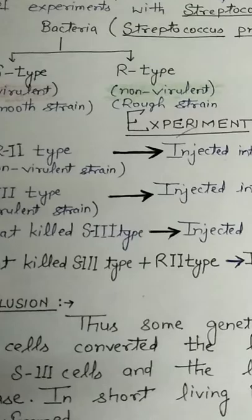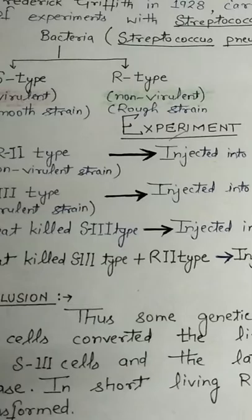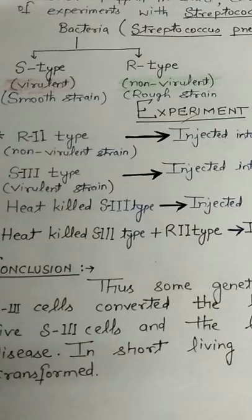Both S and R strains are found in several types and are known as S1, S2, S3, etc., and R1, R2, R3, etc., respectively. Griffith chose S3 and R2 strain for his experiment.